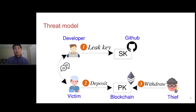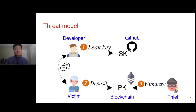We formulate the problem into three steps. First, a user leaks her secret key to the public. Second, the victim deposits the assets into the leaked account. At last, an attacker withdraws the assets from the account. Our work is to understand and prevent the leakage of secret keys on the Ethereum and BSC network.